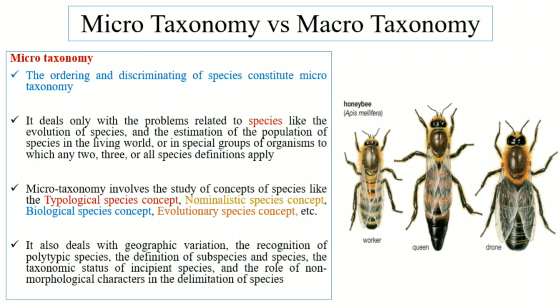Microtaxonomy also covers the role of non-morphological characteristics in the delimitation and identification of species. For example, here you can see the honey bee, species Apis mellifera, and its different castes: worker, queen, and drone. Its species identification and classification are studied within microtaxonomy.